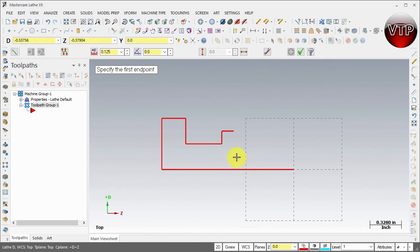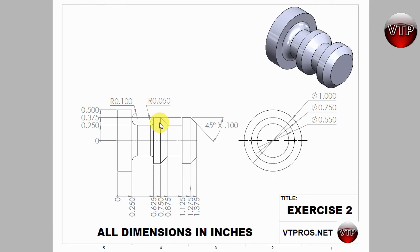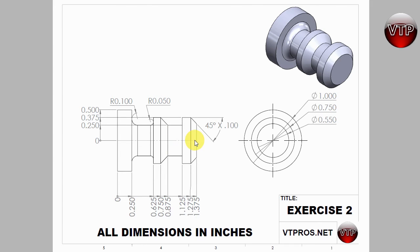Now for the next and fun part — I'm going to start my line right here but I need to snap it at a point. The way you figure that point out: if you go back to your drawing, that point is 0.25 in D and 0.875 in Z. But the most important part is that's the dimension from here, and your origin in Mastercam is here, so you need to figure out the distance from origin to that point. You take 1.375 minus 0.875 and that gives you your distance.